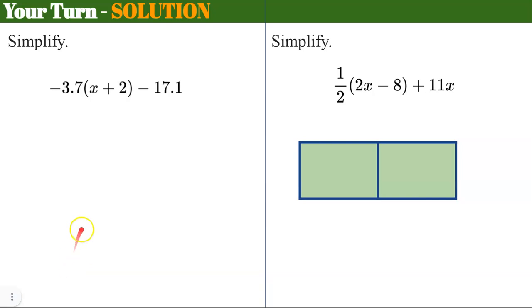Welcome back. So here is our solution. We are going to multiply negative 3.7 times x, which is negative 3.7x, negative 3.7 times positive 2, and bring that work down. And then we need to subtract 17.1. We do not multiply the negative 17.1 by negative 3.7 because it's not in the parentheses.